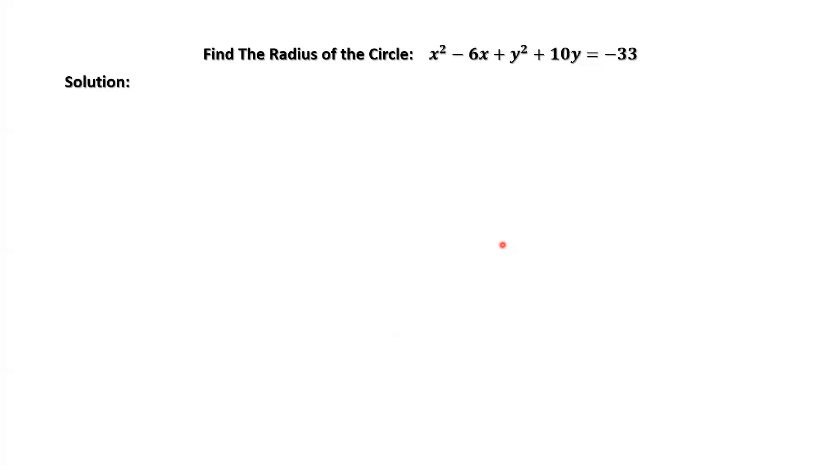Let's review the circle. Tips for a circle: The standard equation for a circle is x minus h squared plus y minus k squared equals r squared.